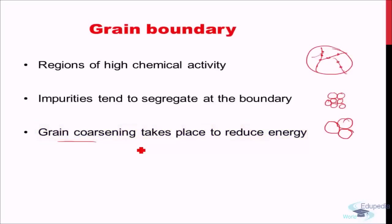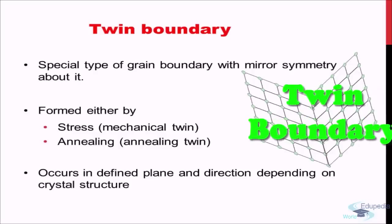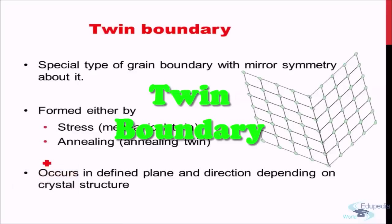To summarize: grain boundaries are regions of mismatch of crystallographic orientation, consisting of either edge dislocations in tilt grain boundaries or screw dislocations in twist grain boundaries. They are also regions of high chemical activity. The third type of two-dimensional defect is a special kind of grain boundary known as twin boundary.